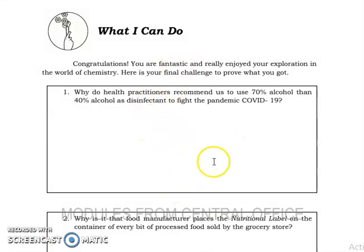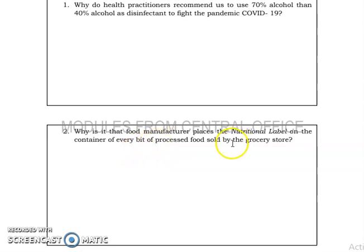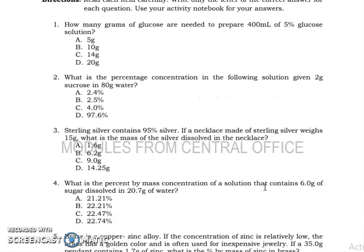For the What I Can Do part, it's your turn to prove what you've got. Why do health practitioners recommend us to use 70% alcohol than 40% alcohol? Of course, 70% alcohol contains more alcohol than that of the 40% alcohol. Why is it that food manufacturers place the nutritional label on the container of every bit of processed food sold by the grocery store? For me, I am going to refer to the nutritional label if I want to identify how many sodium, for instance, contains in that food.